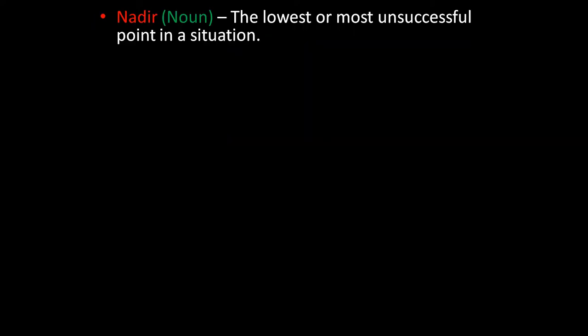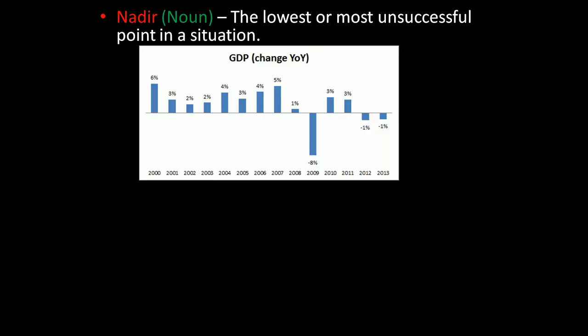The next word is nether — it is pronounced as nether, not nadir. Nether is a noun. It means the lowest or most unsuccessful point in a situation. In this graph, the bar which is at minus eight percent is a nether point — that is the lowest point.